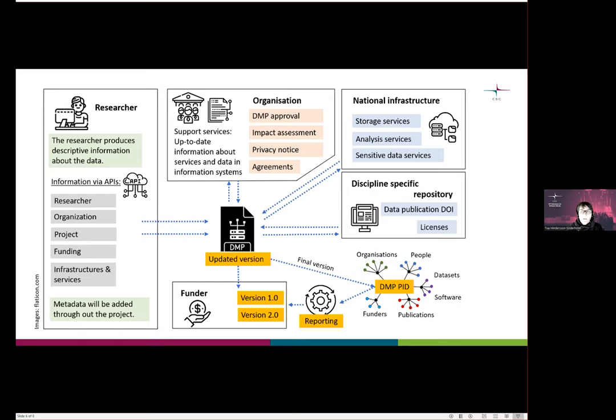There is also the possibility to reuse the metadata when publishing different distributions of the datasets. Integrating the DMP with national infrastructures and the register of data repositories could provide the researcher with service recommendations based on the data information, and also provide service providers with preliminary information about upcoming capacity needs. Tying all elements together already as the project progresses saves the researcher time and effort when reporting outputs.